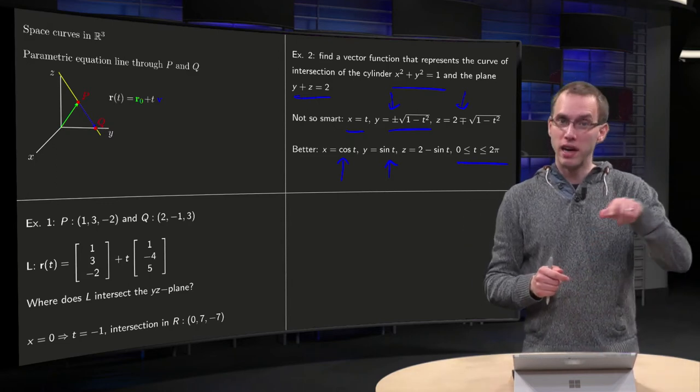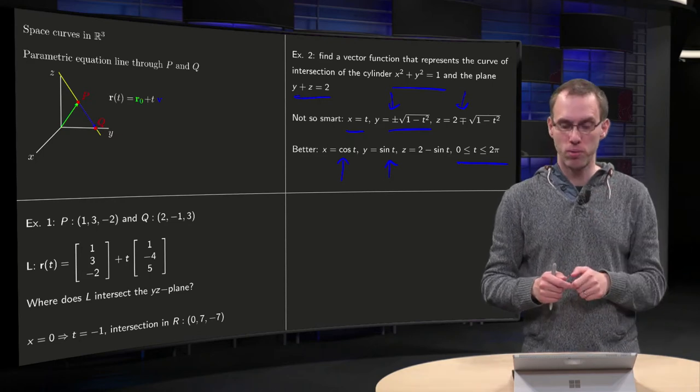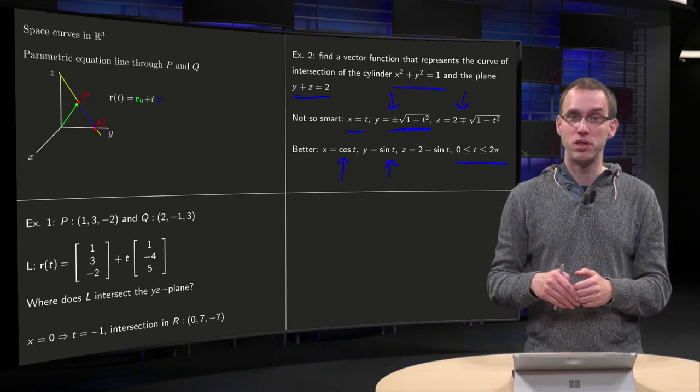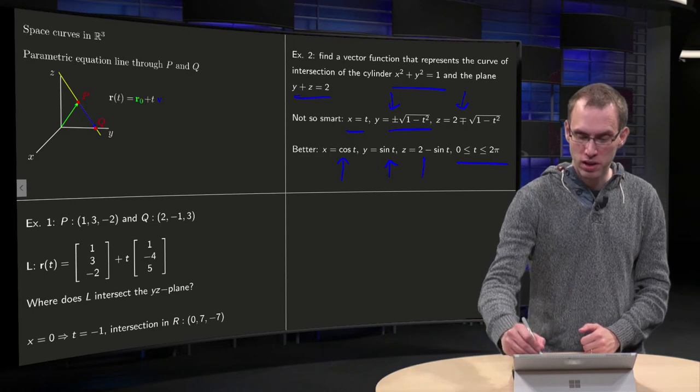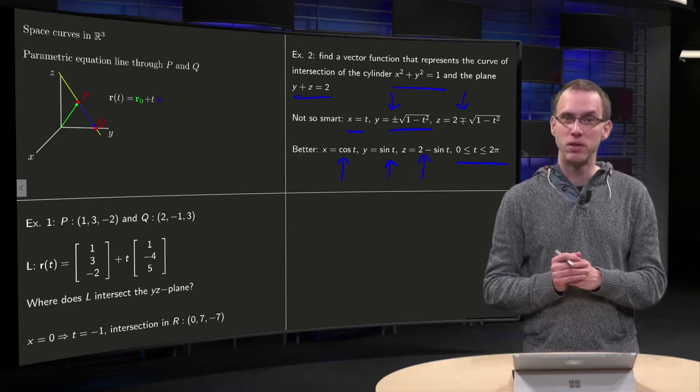In this way x and y nicely run along a circle. And then for z you just use the equation z equals 2 minus y, so z equals 2 minus sine t. So there you are.